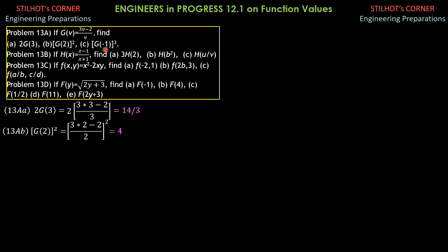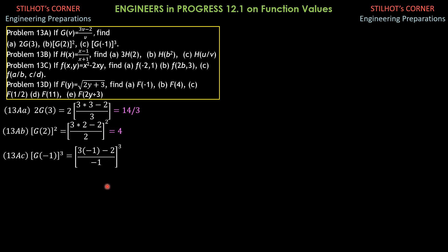For 13c, [g(−1)]³. That would be (3 times negative 1 minus 2) all over negative 1, cubed. That gives negative 5 over negative 1, which is 5, then 5 cubed. So, g(−1) quantity cubed is 125.